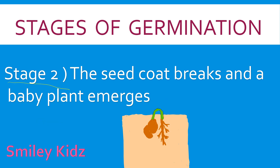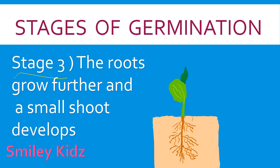Stage 2: The seed coat breaks and a baby plant emerges, which you can see here. We can also see small roots have grown. Stage 3: The roots grow further and a small shoot develops. These are the roots, this is the cotyledon, and this is the shoot.